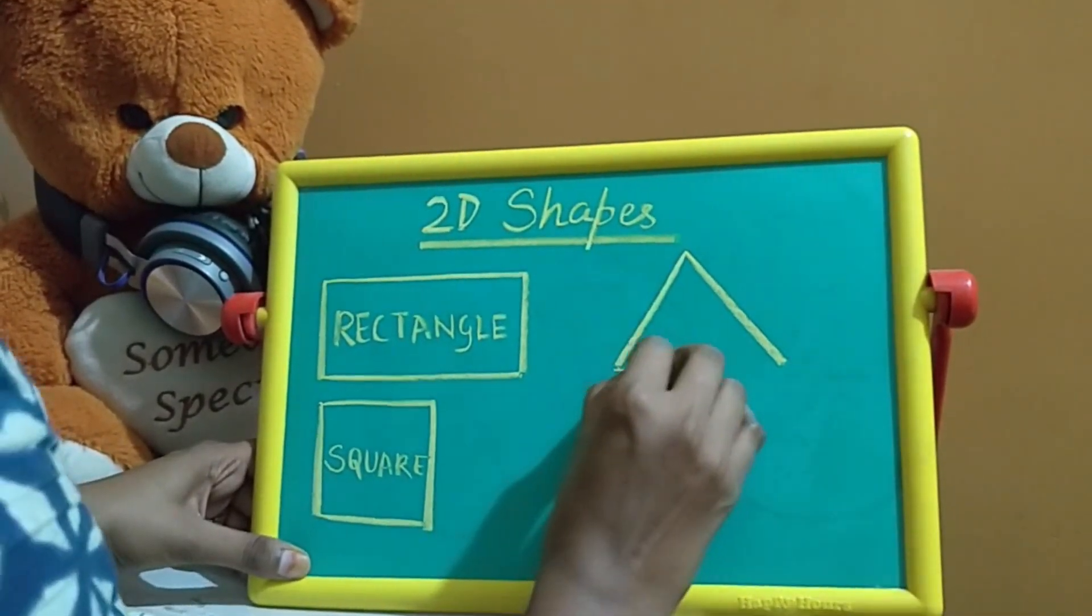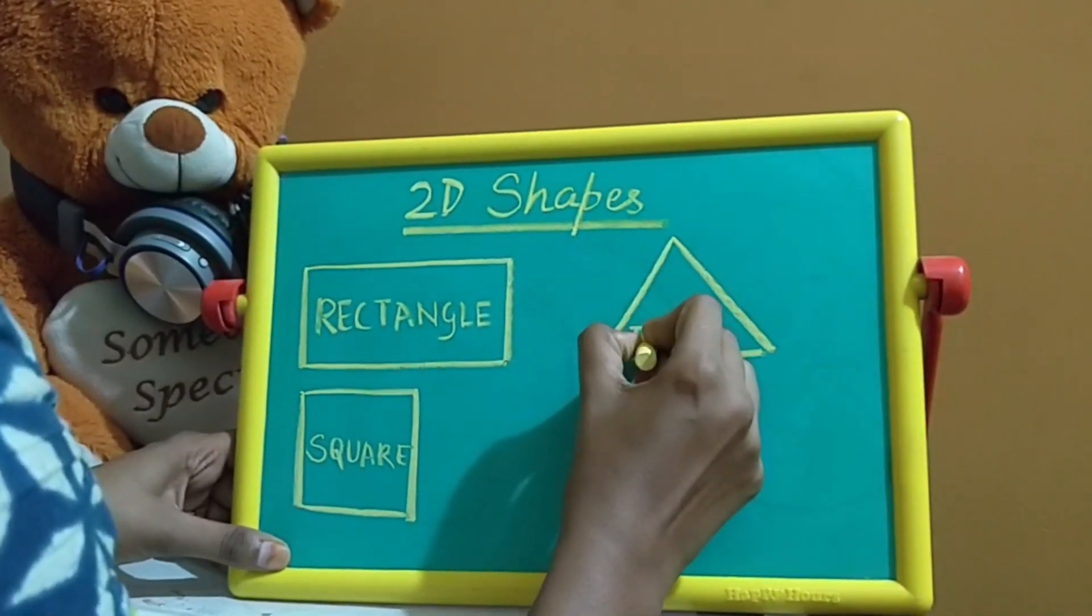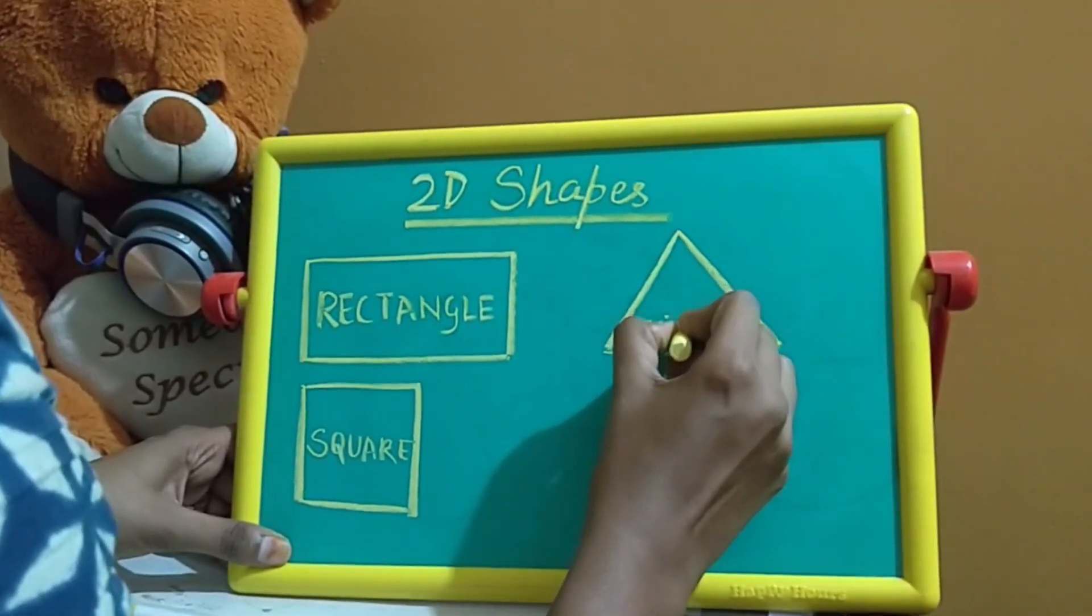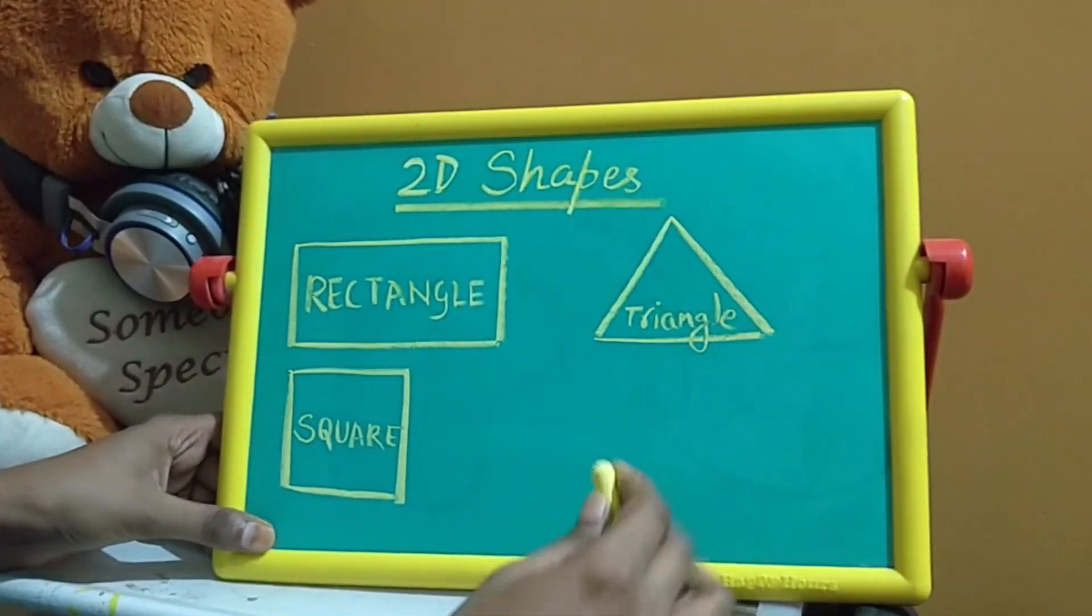Now tell me the third one figure. This is Triangle and what is the property of Triangle? Here a Triangle has 3 sides.